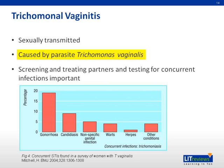Trichomonal vaginitis is caused by the parasite Trichomonas vaginalis. It is the only sexually transmitted vaginal infection of the three infections discussed. Unlike chlamydia and gonorrhea, it does not affect extra-genital sites, but can infect the vagina, urethra, and periurethral glands. Partners in the last two months should be screened and treated. Testing for other infections including BV and other STIs should be considered, as 60% of patients have BV and 30% have chlamydia or gonorrhea.